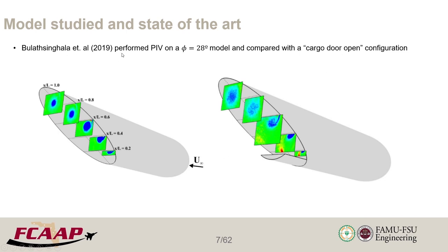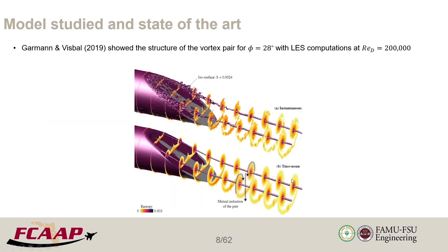This is regarded as two regimes in this flow. The shallow slanted angle produces the vortex pair — this is the range we're more interested in for aircraft. On the other side we have the wake regime where we have a fully separated bluff body wake. Very recently there was a study by the University of Bath performing sparse PIV planes looking at a single vortex, and they compared this with the cargo door open configuration. On the computational side, there is a study by Godwin and Fistball with high-resolution LES computations also observing the same vortex pair structure.